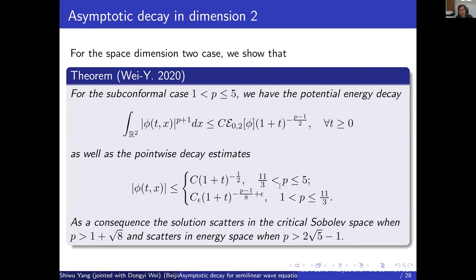For dimension two, our method gives much better results: pointwise decay estimates for the potential energy in terms of t with decay rate minus two(p-1) over two, and pointwise decay estimates for the solutions. The lower bound for which the solution decays as fast as linear waves is when p has a lower bound of 1 plus square root 8. Previous results only proved sharp decay when p is bigger than five; for all other p we can also obtain decay estimates leading to scattering results in the critical Sobolev space when p is bigger than 1 plus sqrt(8), and in the energy space for the corresponding lower bound.